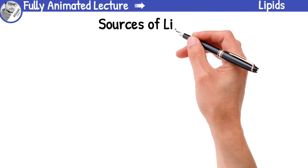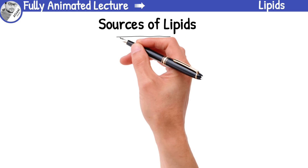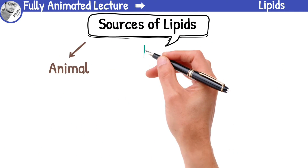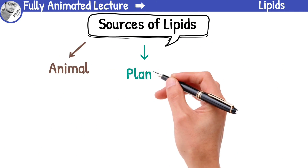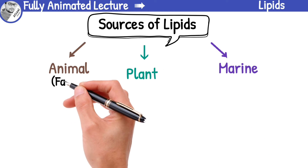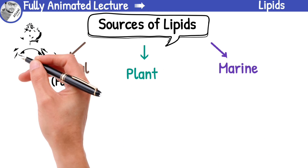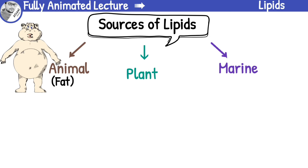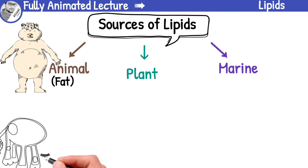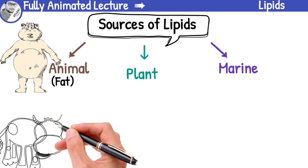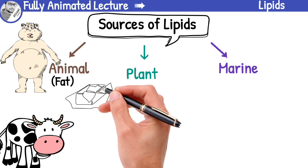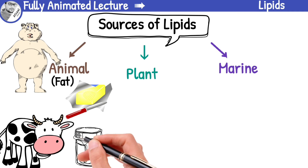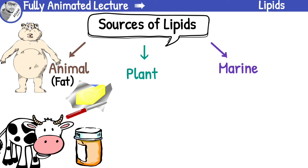Now let me tell you some sources of lipids. Lipids are naturally synthesized by animals, plants, and marine organisms. Animal fats are found in adipose tissue cells, which help to regulate our body temperature, store energy, and protect our organs. Animals secrete milk from which butter and ghee are obtained. Butter and ghee are used for cooking and frying of food, for preparing bakery products and sweets.